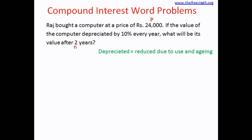Now looking at the rate — rate is 10%, but in this case the price is reducing by 10%. In many problems the principal increases, so when the principal increases R is positive. When it is reducing, R is negative. So in this case the rate will be negative 10, because the price of 24,000 is going to reduce every year. In other examples where we calculate interest on the principal, the interest gets added and the value increases. Here the value is going down, so R is negative.